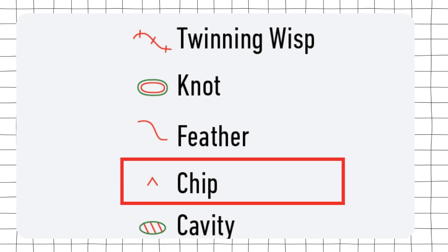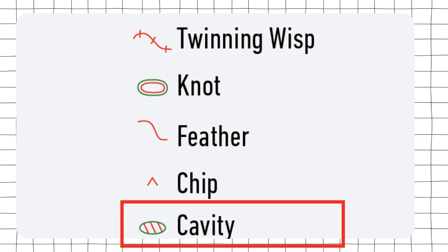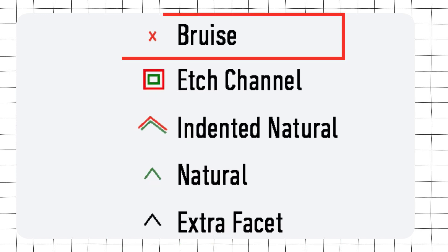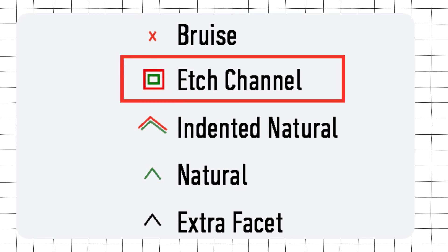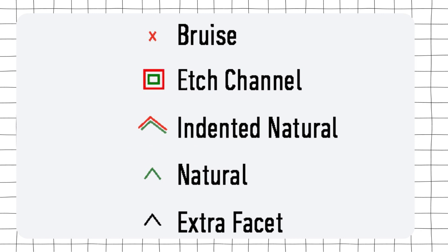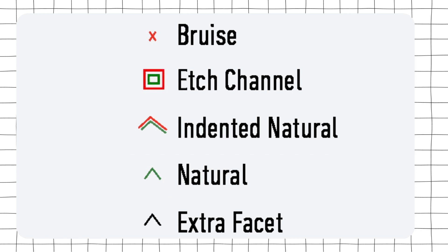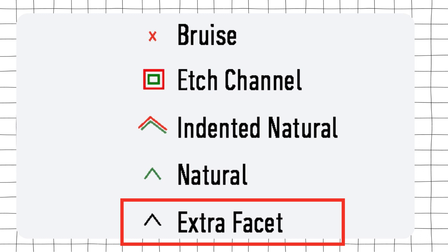The chip is like an inverted triangle. The cavity has both green and red color — it is basically a green circle with red lines marked inside. The bruise is a small X mark. The edge channel has an outer red square and an inner green square. The indented natural has both colors — green and red. Natural only has green, because it is the only inclusion that uses only the green color. Finally, the extra facet is in black color.